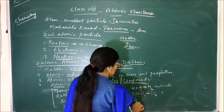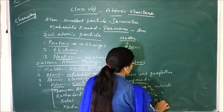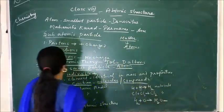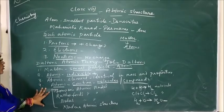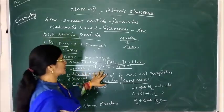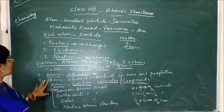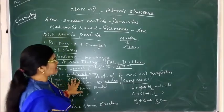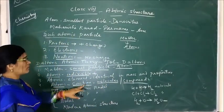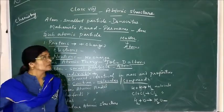Similarly, two atoms of hydrogen combined with one atom of oxygen form a water molecule. Water is a compound, while hydrogen and chlorine are molecules. So the four main points of Dalton's theory are: all matter is made up of very small particles called atoms; atom is an indivisible particle; all atoms of an element are identical in mass and properties; and atoms combine together to form molecules and compounds.